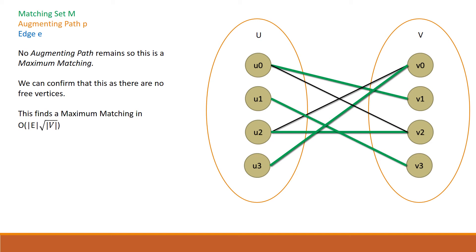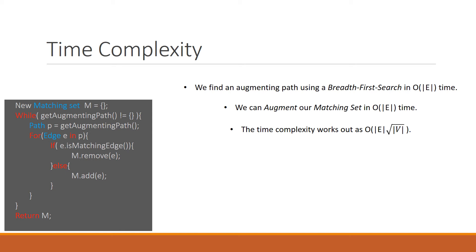Overall this finds the maximum matching in O(E√V) time. We can find an augmenting path using breadth first search in O(E) time where E is the set of edges. Normally a breadth first search takes O(E + V) time, but in the worst case scenario we have a very dense graph where the number of vertices is much less than the number of edges, so we omit the vertex term to simplify the complexity. We can augment our matching set in O(E) time — as seen in the pseudocode, we loop through each edge once. In the end our time complexity works out as O(E√V).